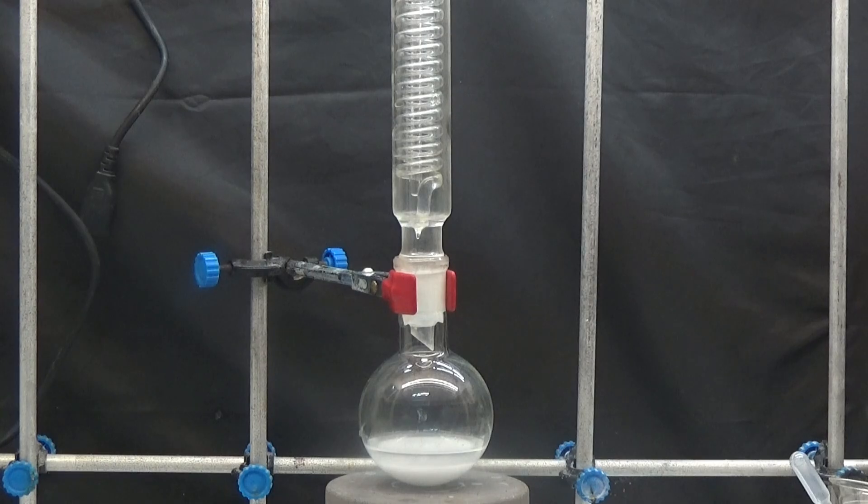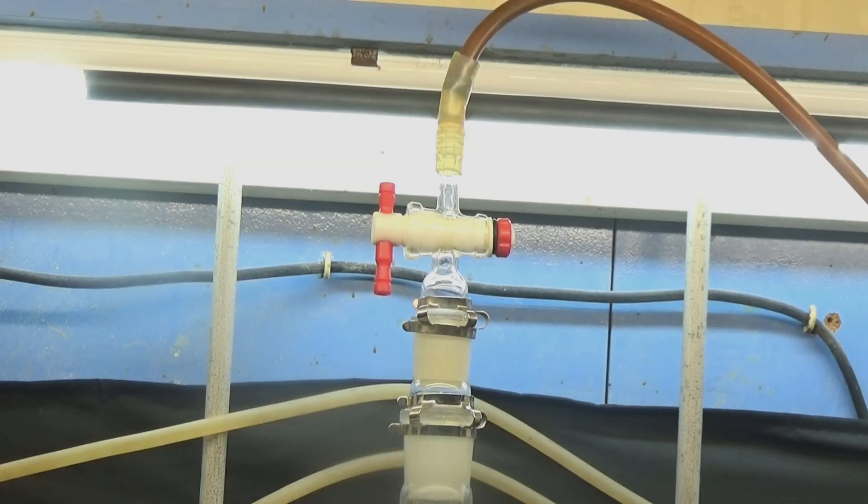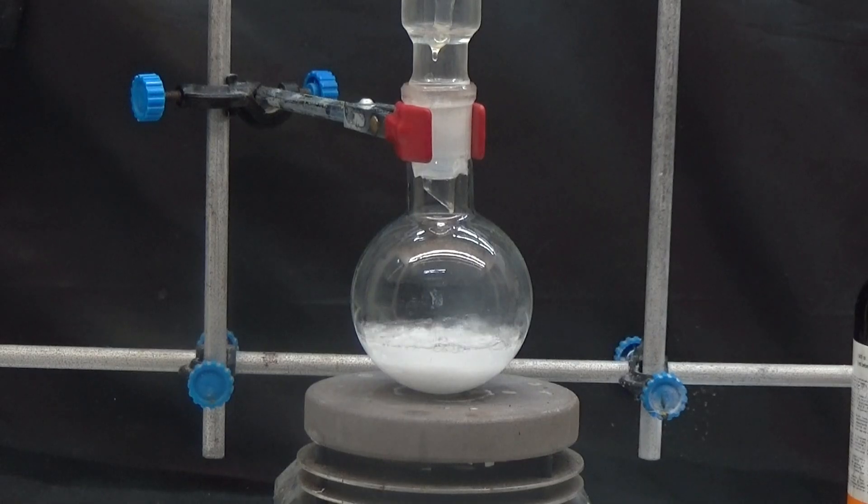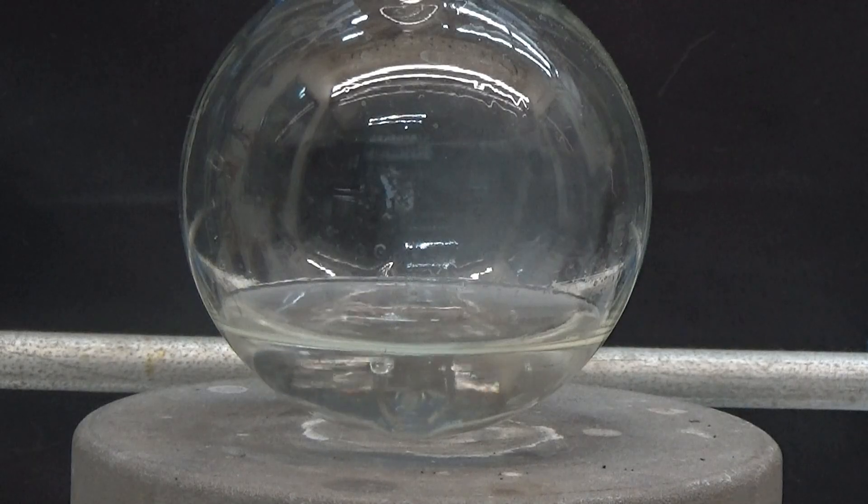A reflux condenser is installed and the outlet is connected to the fume hood through a tube. The mix is heated until it is completely dissolved. The operation can last for about two hours.